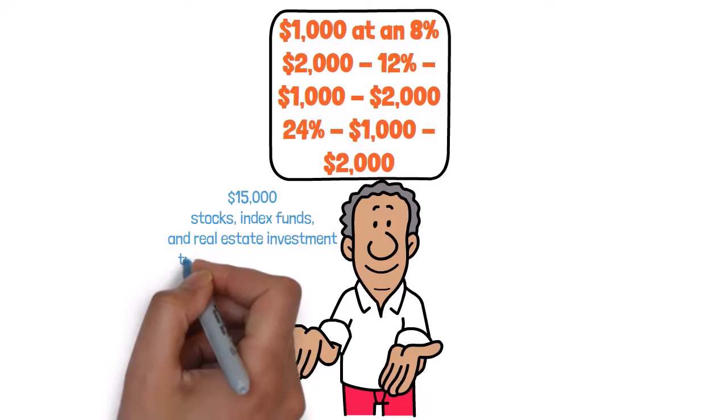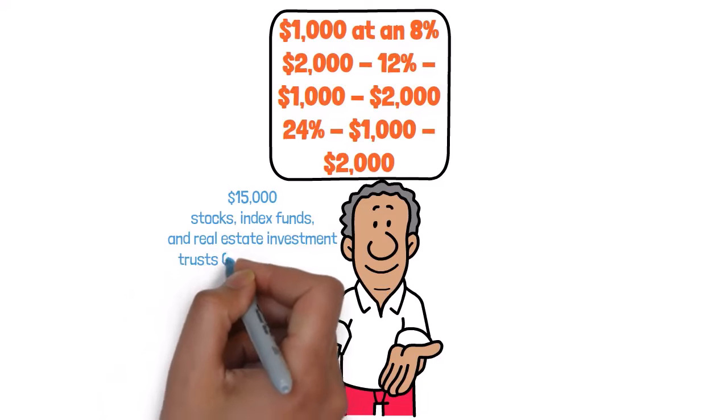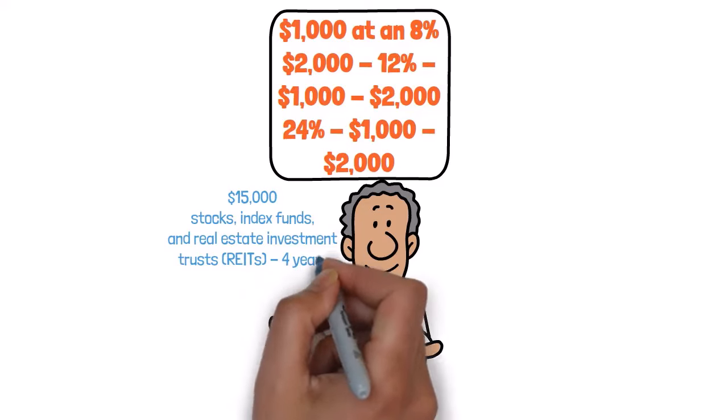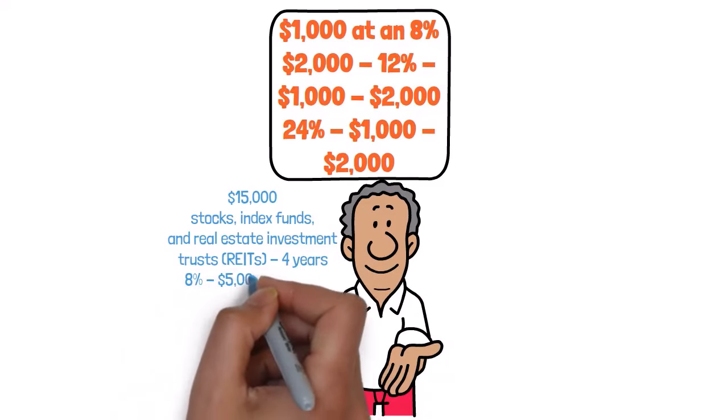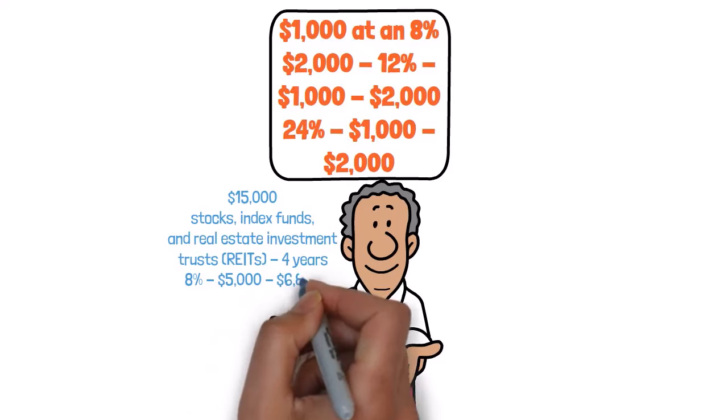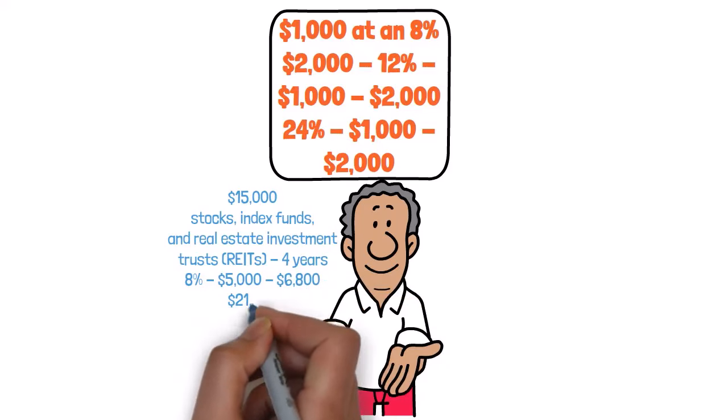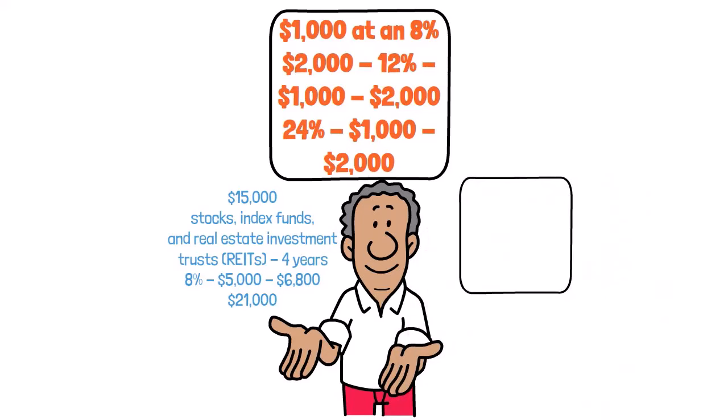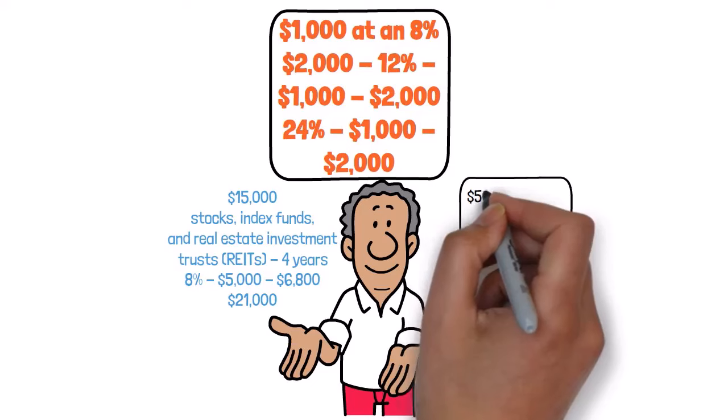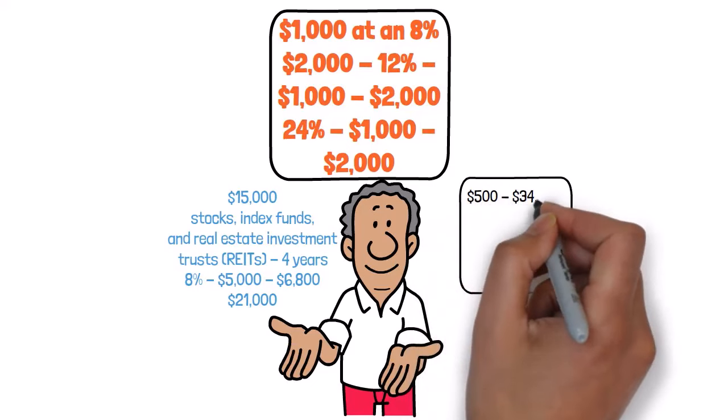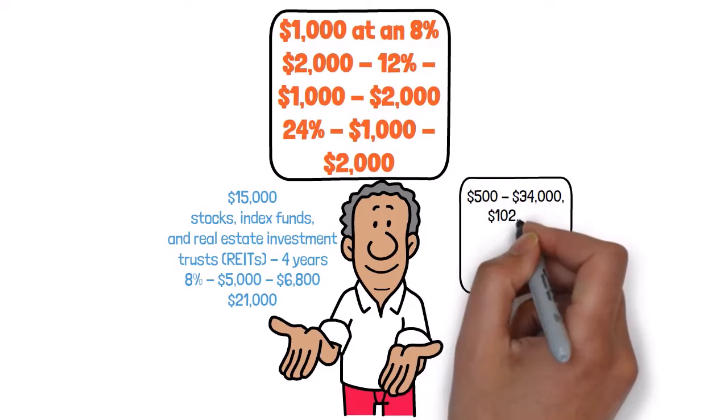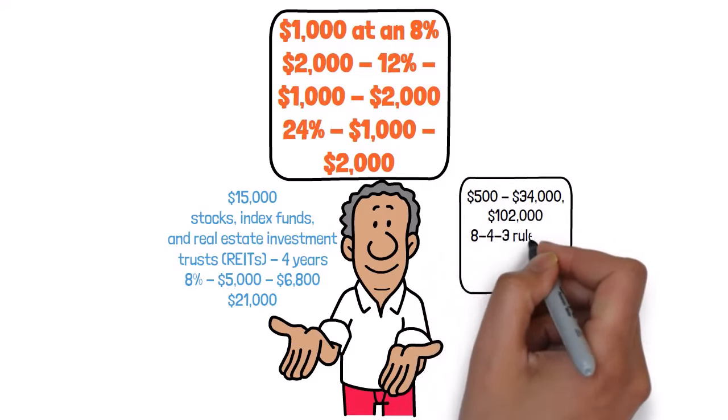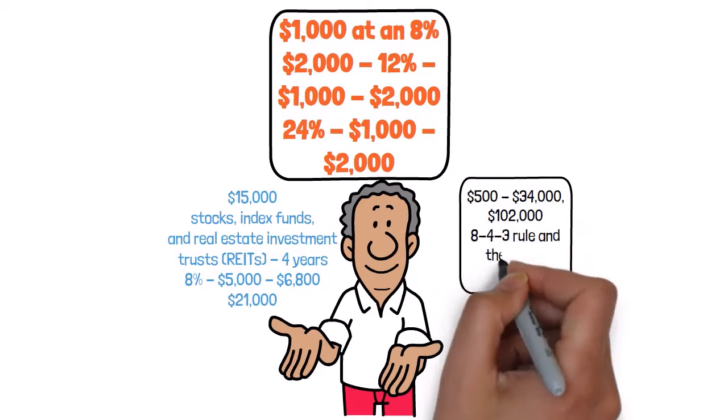Over 4 years with an average yearly return of 8% for each asset, John's initial $5,000 investment in each will grow to around $6,800 per investment, bringing his total investment to about $21,000. But, if John decides to make a disciplined monthly contribution of $500 to each asset, after 4 years, each of his investments will have grown to approximately $34,000, totaling over $102,000. Now that's some serious potential, thanks to the magic of the 843 rule and the power of compounding.